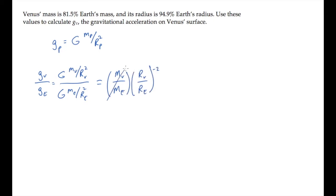We know these numbers from the problem statement, so we can substitute them and calculate to find the ratio of their gravitational accelerations is 0.905.